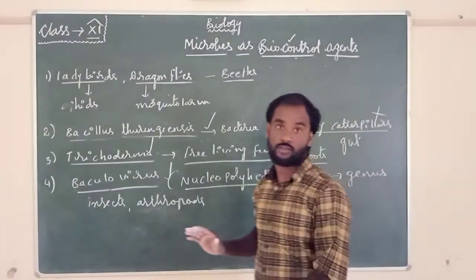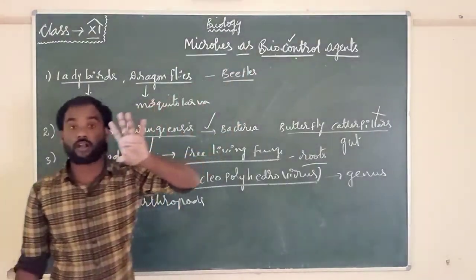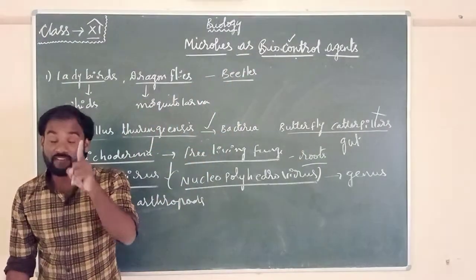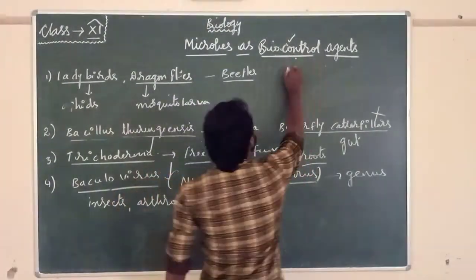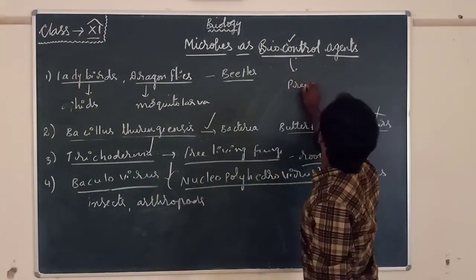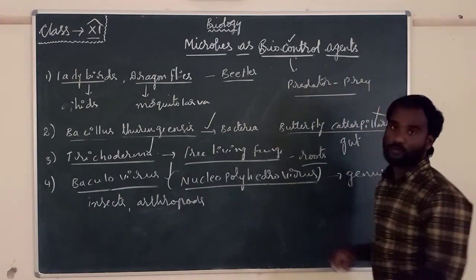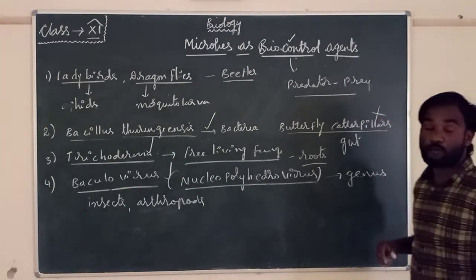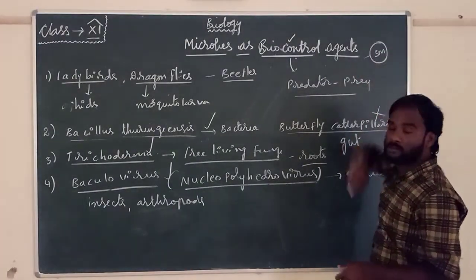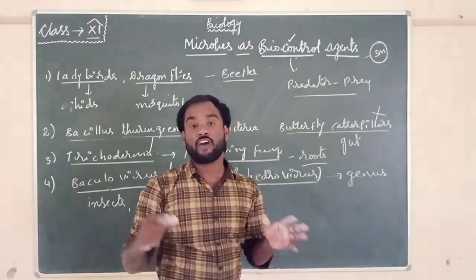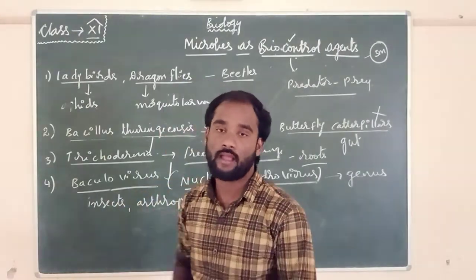So this is about the role of microbes as biocontrol agents. A very important point: the biocontrol method depends on the principle of predation. That's all about microbes as biocontrol agents — this is very important for exam questions. In the next class we will discuss the role of microbes as fertilizers. Thank you.